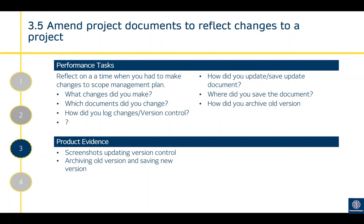Criterion 3.5 is to amend documents to reflect changes — changes have been approved, communicated out, and documents are now updated. In most holistic statements, 3.4 and 3.5 would be switched around — you'd probably update documents before communicating out to stakeholders. For 3.5, you want evidence that you've actually updated project documents: the schedule plan, resource plan, finance plan, version control updated, saved in the right place or on the correct software. Reflect on what changes you made, what documents you changed, how you logged version control, how you saved and archived the old version — just a bit of detail about how you actually did that. Product evidence would be screenshots of version control, archiving an old version, or saving a new version — for example in SharePoint marking it as archived and putting the new version there.